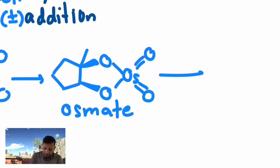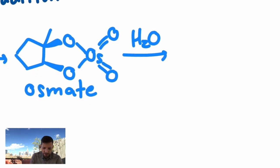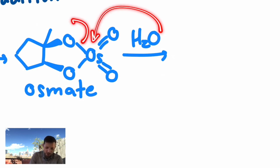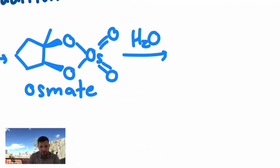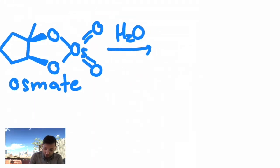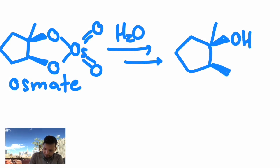And this reacts with water. I'm not going to show the whole mechanism for this. It's not crucial. But water essentially attacks the osmium and kicks out those osmium oxygen bonds. And then it does it again. And you cap off those oxygens as H's. So I'm just going to show that with a couple of arrows. Meaning it's okay to skip the mechanism for that. But that's how you get your diol.